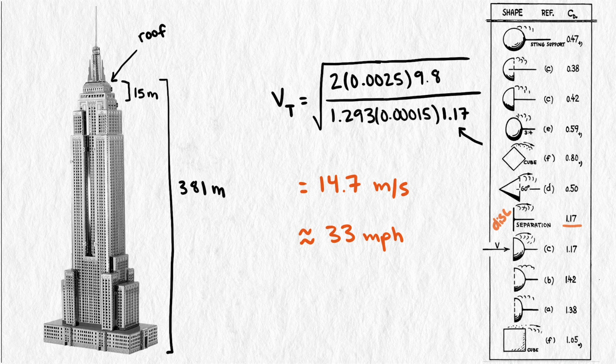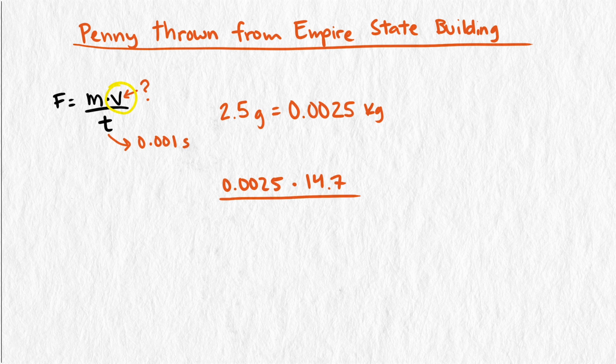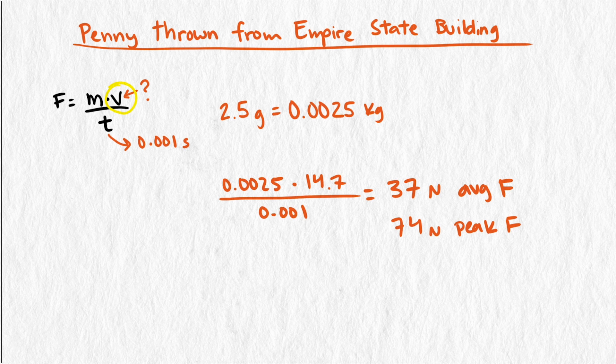Now that we have velocity, we can calculate the impact force. 0.0025 times 14.7 divided by 0.001 gives us an average impact force of 37 newtons, and a peak impact force of 74 newtons. Nowhere near close to the force needed to kill someone, or even seriously injure them.